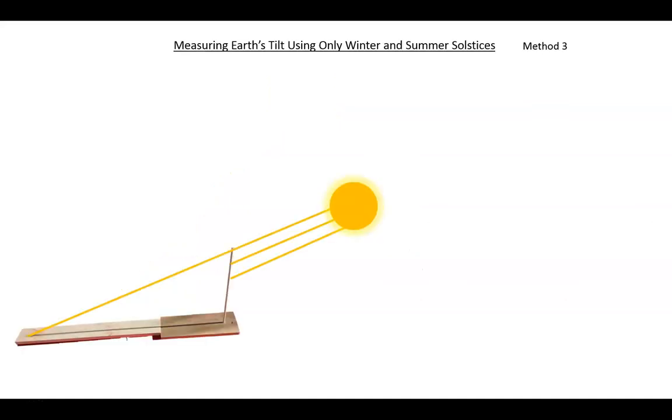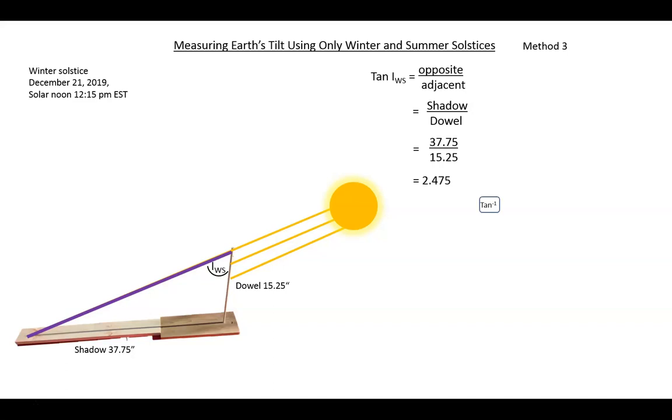Measurement using winter and summer solstices, method 3. Here is the information obtained for the winter solstice. Solar noon is now 12:15 because it's eastern standard time. The dowel length is still 15.25 inches, but the shadow is much longer now at 37.75 inches. Here is our triangle showing the angle of incidence IWS for the winter solstice. The tangent of IWS is shown now as before, and after entering the measurements, we get the angle of incidence at the winter solstice as 68 degrees.